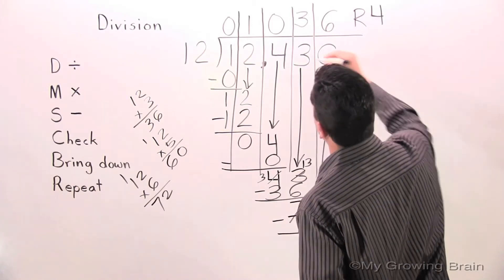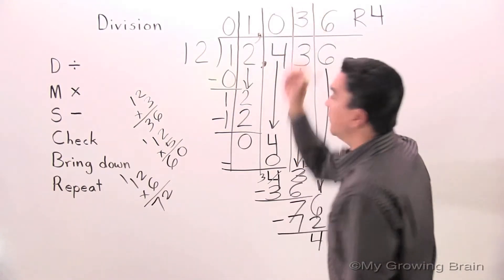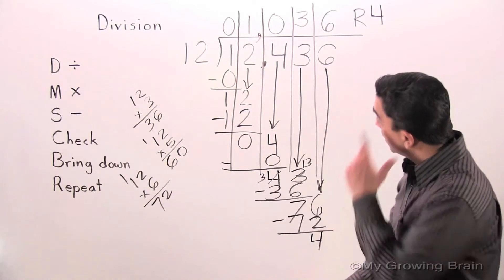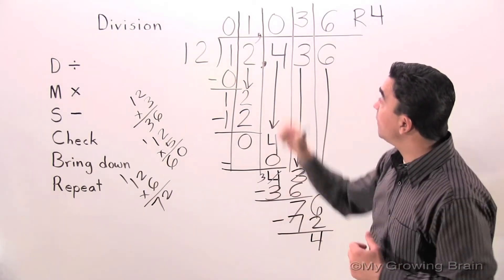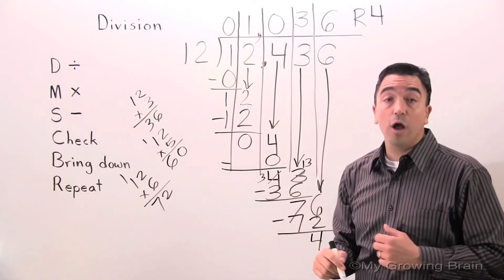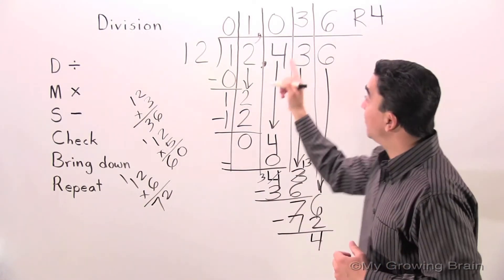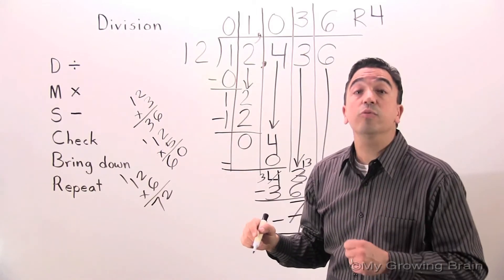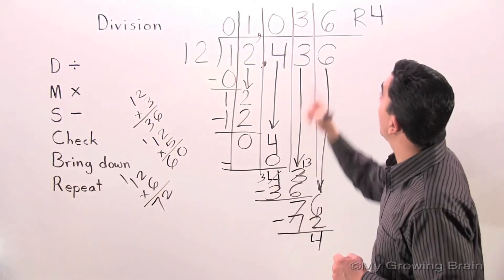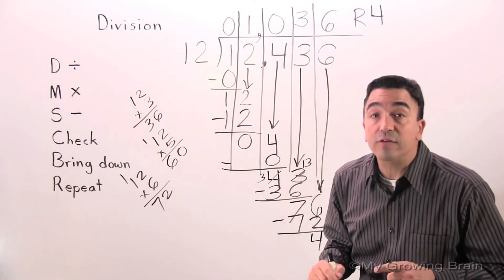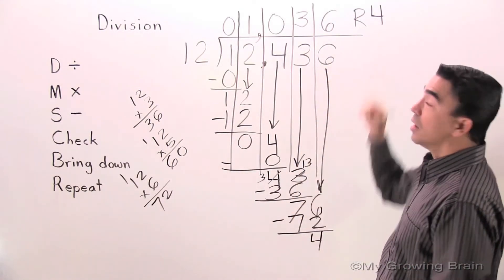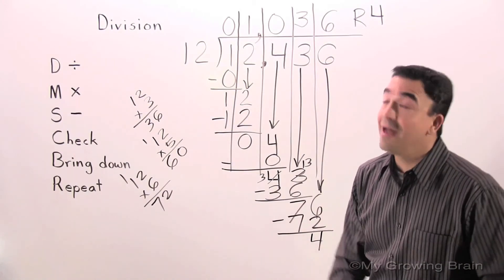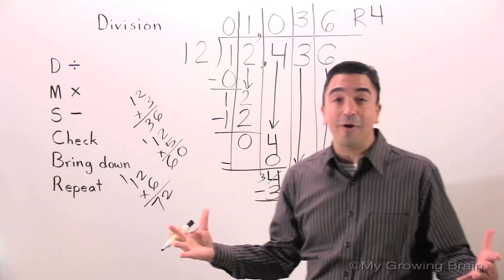So, this means that 12,436 divided by 12 is equal to a quotient of 1,036 remainder 4. That concludes our lesson on Division — Coach Mike at My Growing Brain. Challenge yourself.